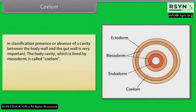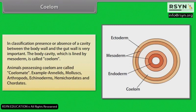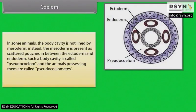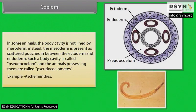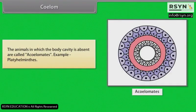In classification, presence or absence of a cavity between the body wall and the gut wall is very important. The body cavity which is lined by mesoderm is called coelom. Animals possessing coelom are called coelomates. Example: annelids, molluscs, arthropods, echinoderms. The animals in which the body cavity is absent are called acoelomates. Example: platyhelminthes.